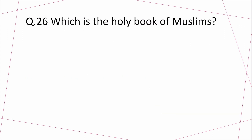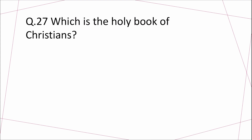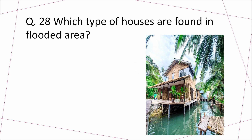Question 26: Which is the holy book of Muslims? Answer: The Quran. Question 27: Which is the holy book of Christians? Answer: The Bible. Question 28: Which type of houses are found in flooded areas? Answer: Stilt houses.